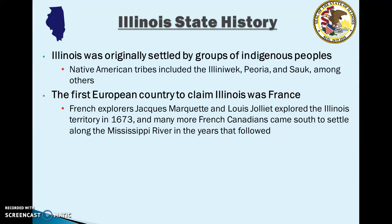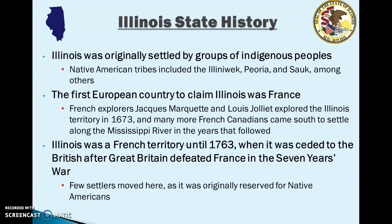Originally Illinois was French land and it would remain a French territory until 1763, when it was given to the British after Great Britain defeated France in the Seven Years War. In North America, the Seven Years War is often called the French and Indian War, and this was the war that brought the Illinois territory into the hands of Great Britain.